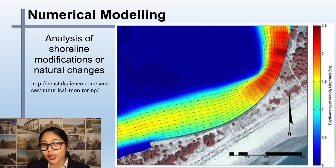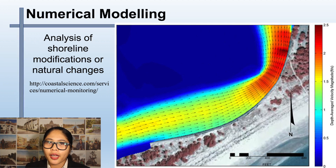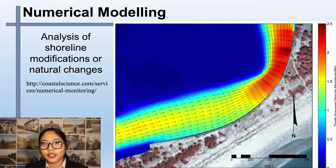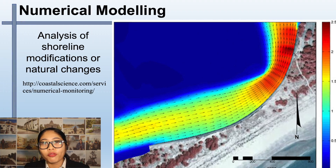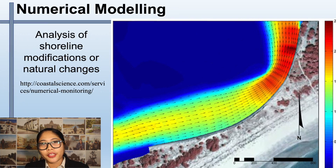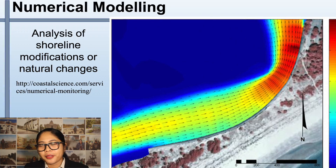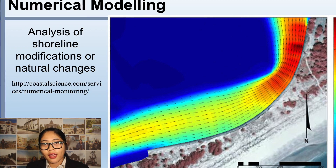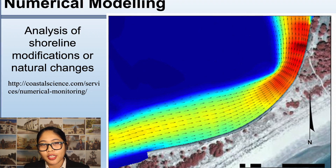The next example is Numerical Modeling. In this case, they are analyzing shoreline modification or natural changes using a Numerical Model. A Numerical Model is a mathematical model that uses a numerical time-stepping procedure to obtain the model's behavior over time. The mathematical solution is represented by a generated table and/or graph. Numerical Modeling is a very powerful method for visualizing the dynamic behavior of a physical system. That is the introduction to modeling.